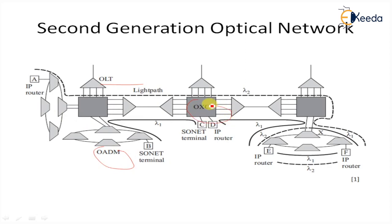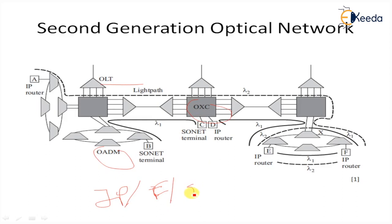The network provides light paths. A light path is an end-to-end connection established across an optical network. The optical layer is a server layer that provides services to other client layers. This optical layer provides light paths to a variety of client layers, including IP, Ethernet, SONET, SDH, as well as other possible protocols such as Fibre Channel.